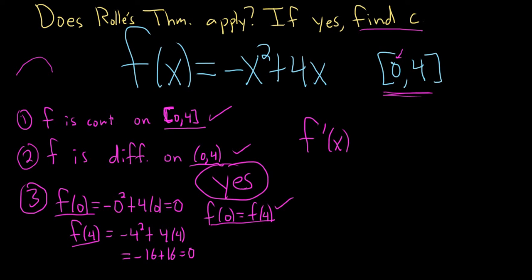You don't even have to call it c, I'll just call it x. So taking the derivative here, it's really easy. It'll be negative 2x plus 4, right? Just the power rule. And you set that equal to 0.